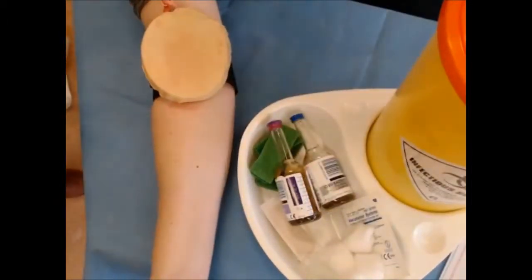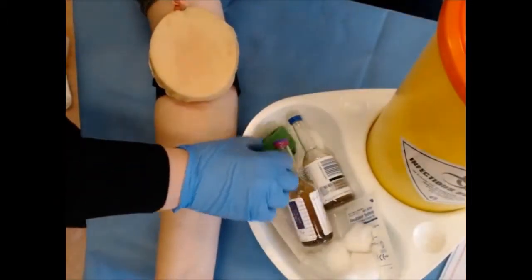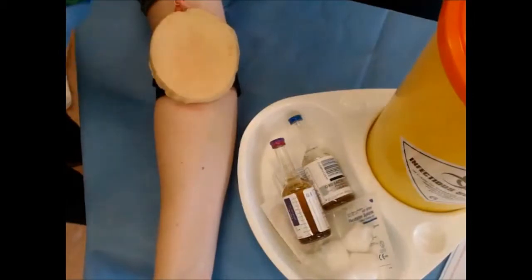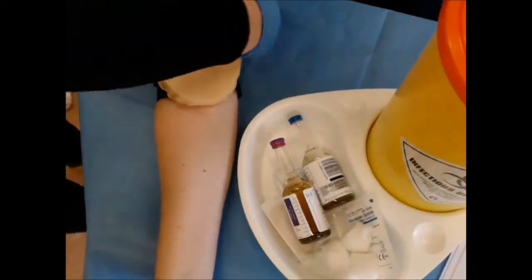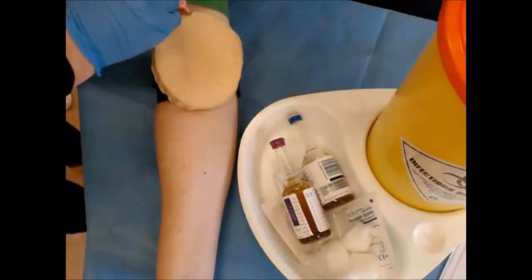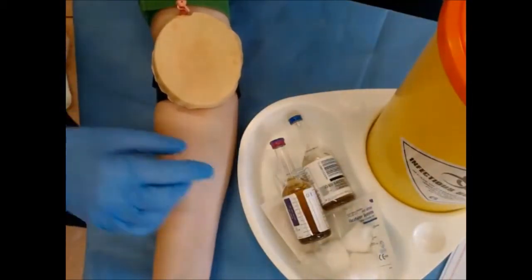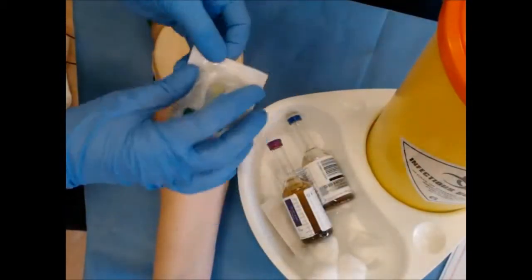OK, so you can take the sample from the antecubital fossa. You would palpate and find a suitable vein. Clean your hands, put on your gloves, apply your tourniquet and set up your equipment.